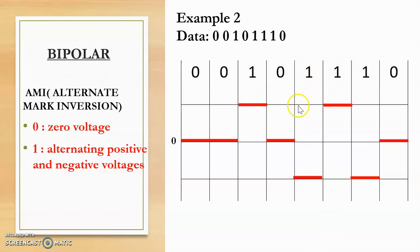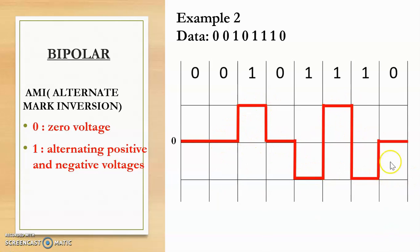The next bit is 1, and since the previous 1 value was positive, this 1 value will be negative. The following bit is also 1; since the previous 1 was negative, this one will be positive. The next bit is 1 again — previous was positive, so this is negative. The last bit is 0, meaning 0 voltage on the reference line. After connecting the lines we get the digital signal for this data using AMI, also sometimes known as BAMI (bipolar AMI).